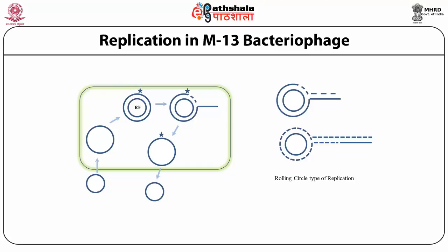The initiation protein remains bound to the 5' phosphate end of the nicked strand and the 3' hydroxyl end is released to serve as a primer for DNA synthesis by DNA polymerase III. Using the un-nicked strand as a template, replication proceeds around the circular DNA molecule, displacing the nicked strand as single-stranded DNA. Displacing the nicked strand is carried out by a host-encoded helicase in the presence of replication initiation proteins. Continued DNA synthesis can produce multiple single-strand linear copies in a continuous head-to-tail series called concatemers.